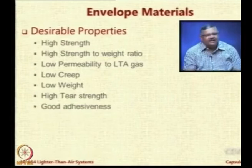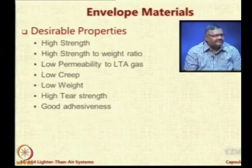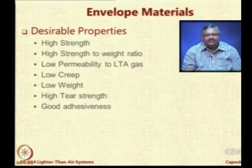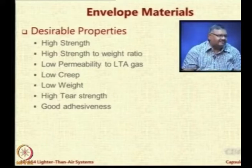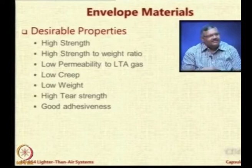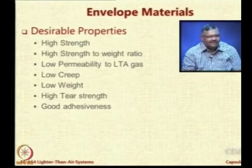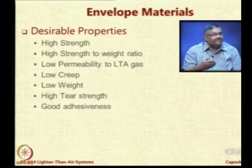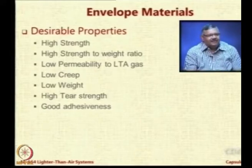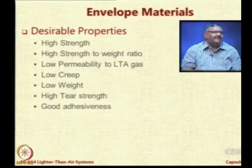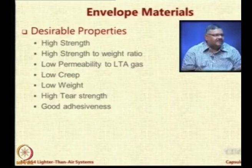Another property is good adhesiveness. In modern fabrics, the method of joining envelope material is adhesives. The Japanese have made tremendous progress in this area, developing special silicone adhesives that are extremely good, long-lasting, and provide very good strength. However, certain materials may not be easy to join by adhesives. Since adhesives will be the method of choice for most future applications, it is important that the fabric allows it to be bonded to other fabrics.